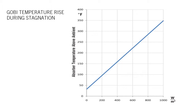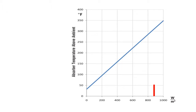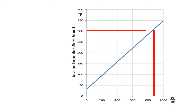In most areas of the United States, the peak solar radiation is within the range of 800 to 1000 watts per square meter, which corresponds to a steady-state stagnation temperature of around 300 degrees Fahrenheit.